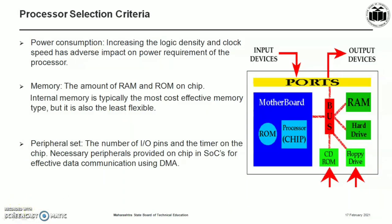The next criteria is power consideration. Increasing logic density and clock speed has an adverse impact on power requirements. A higher clock implies faster charge and discharge cycles, leading to more power consumption. More logic leads to higher power density, making heat dissipation difficult. With more emphasis on greener technologies and many systems becoming battery operated, it is important to design for optimal power usage. Some hardware and software methods are adopted to save power.